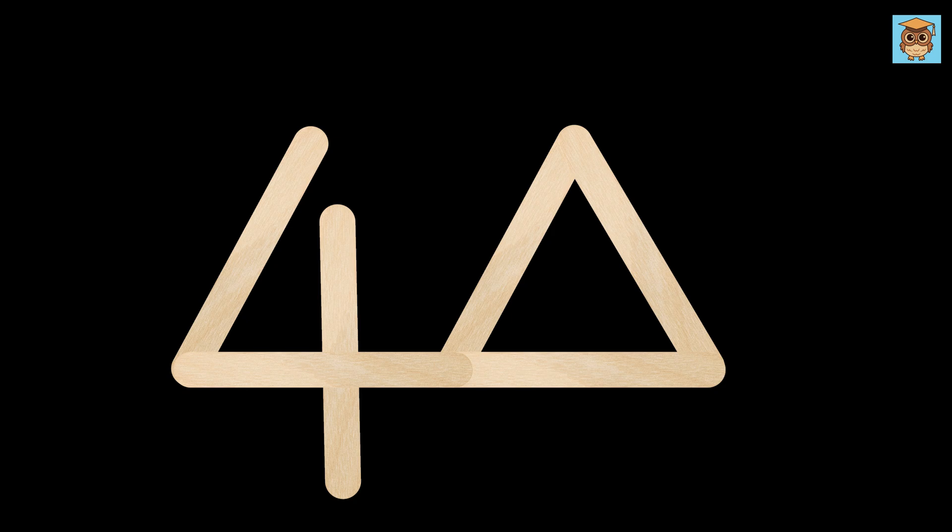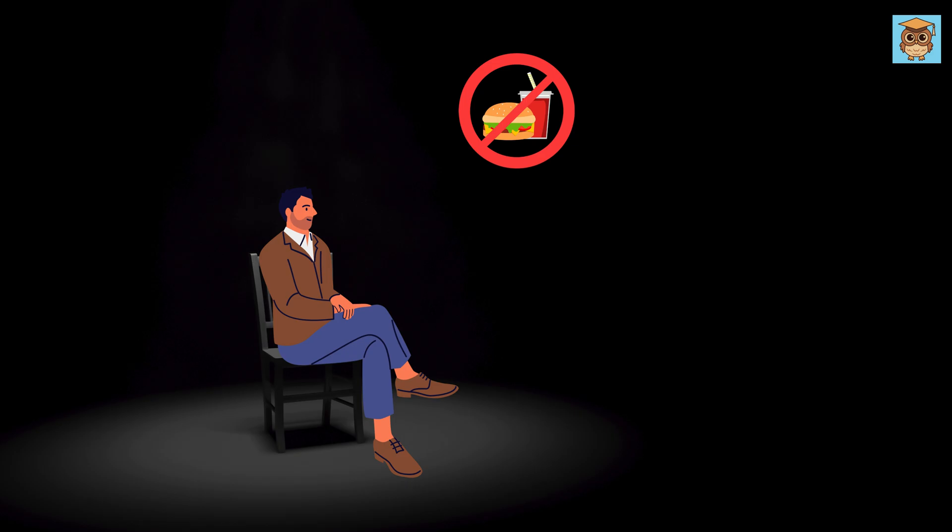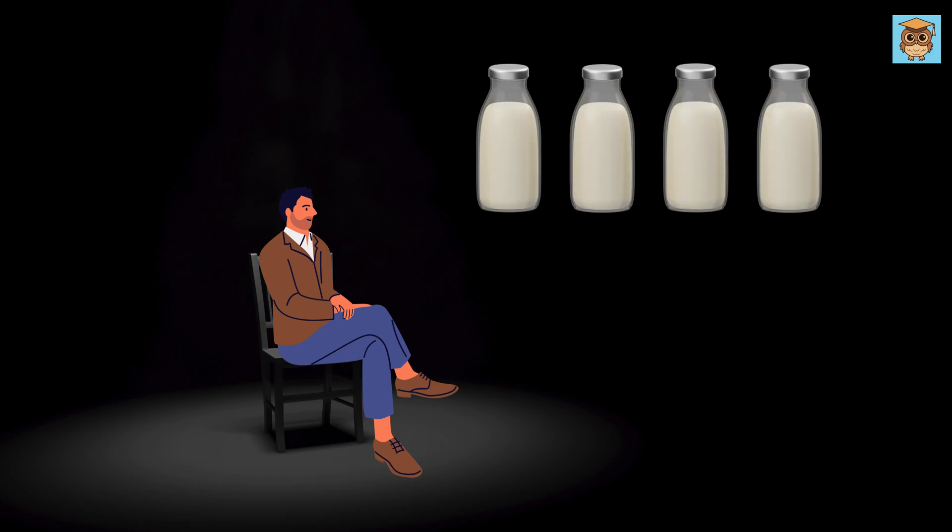Now this next puzzle was asked in a Google interview. You are trapped in a room with no food and no water. After two days you get four bottles of milk, out of which one of them is poisonous.